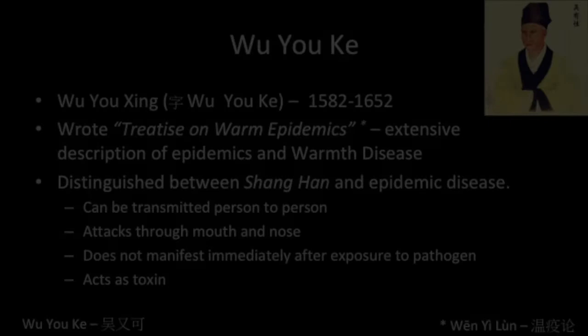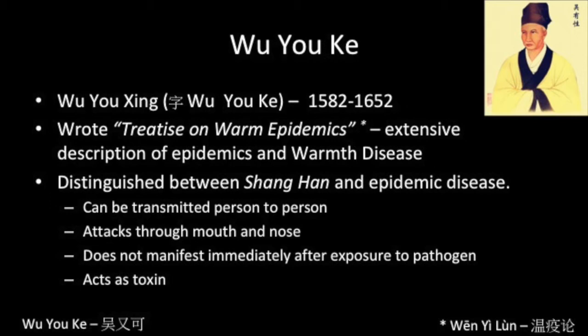By the beginning of the Qing dynasty, warmth disease began to consolidate into a theoretical system independent of Shang Han Lun theory. Wu Yoke wrote the Treatise on Warm Epidemics, which includes an extensive description of epidemics and warmth disease. He distinguished between cold damage disease and epidemic disease, noted that it can be transmitted from person to person and through the mouth and nose, that epidemic disease does not necessarily manifest immediately after exposure, and that it acts like a toxin.